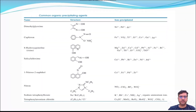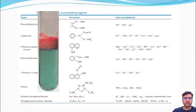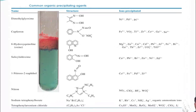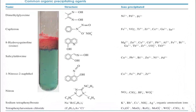Common precipitating agents include, for example, dimethylglyoxime. The structural formula of dimethylglyoxime is shown. Iron is precipitated with dimethylglyoxime, and other metals include nickel, palladium, and platinum.